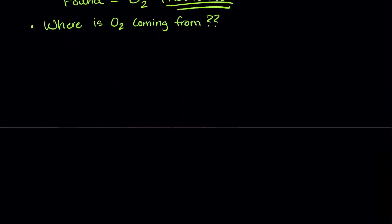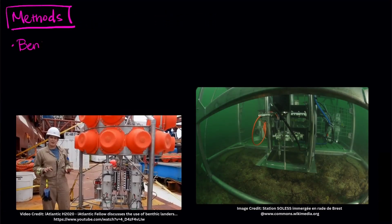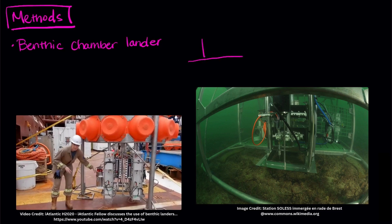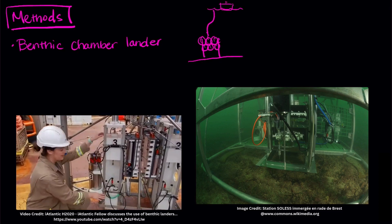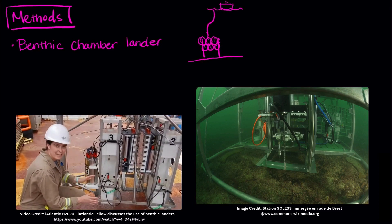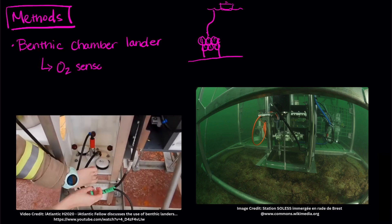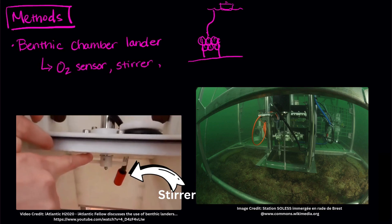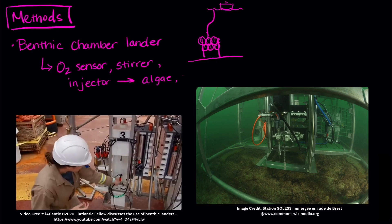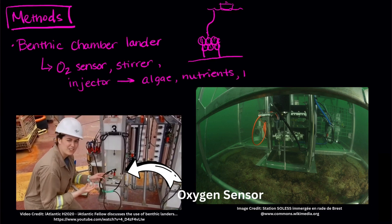Let's talk about the methods. The original respiration experiments used a benthic chamber lander. It's like a portable lab that you can lower off the side of a boat all the way to the bottom of the ocean. It has test chambers with oxygen sensors, stirrers, and injectors to put stuff in, like algae, nutrients, and water.